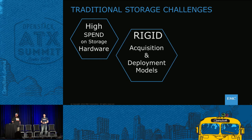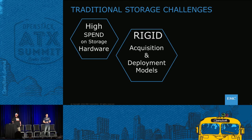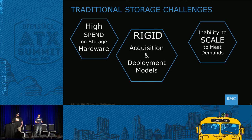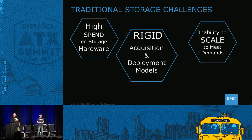You pray to your capacity planning gods that it's going to work out, and by the time you need to expand, you face a tech refresh and data migration — a dirty word. These arrays are pretty rigid. You don't get much flexibility in deciding how you'll deploy them or what they'll look like. You get sold it, a professional services person implements it, a global services person supports it, and you just run it. And of course scale is one of the biggest challenges.